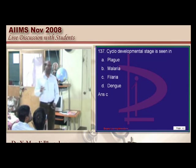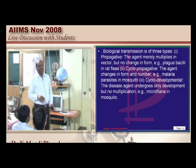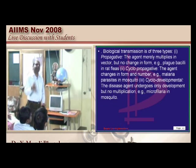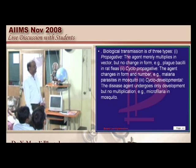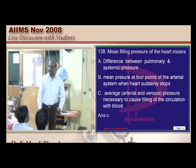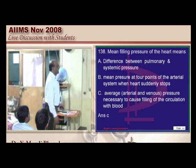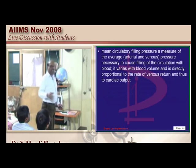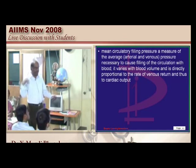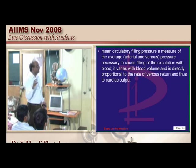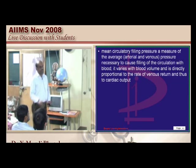Cyclo-developmental propagation is where the disease agent undergoes only development but no multiplication — seen in microfilaria. The mean filling pressure of the heart is the average arterial and venous pressure necessary to fill the circulation with blood.